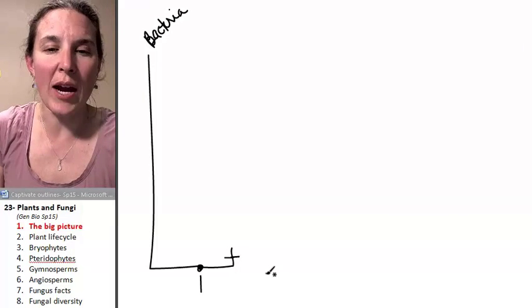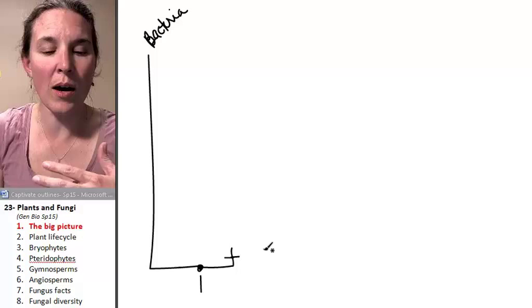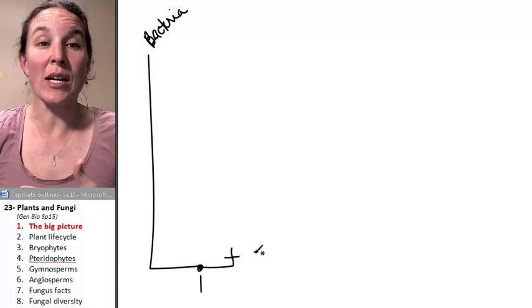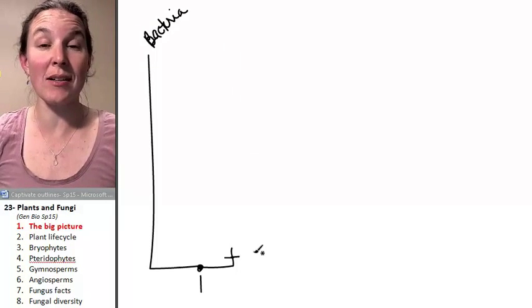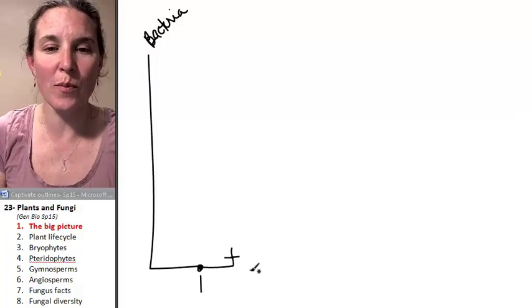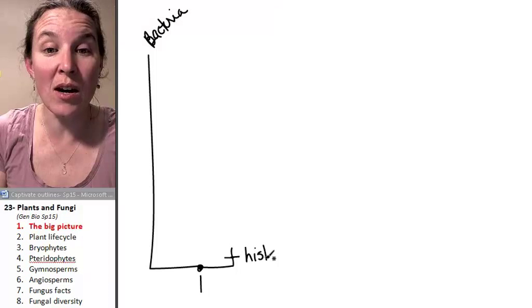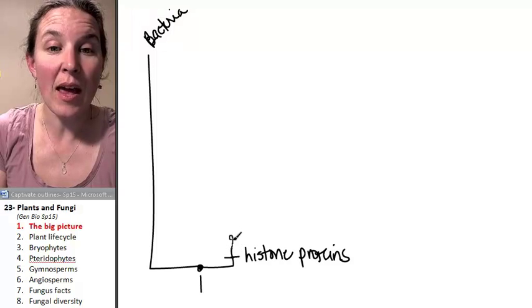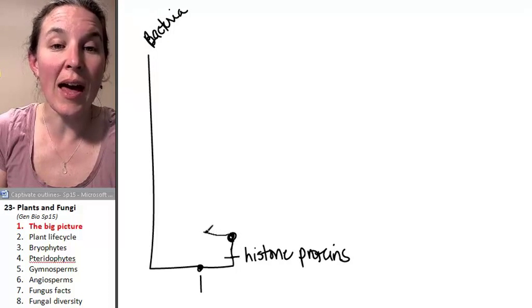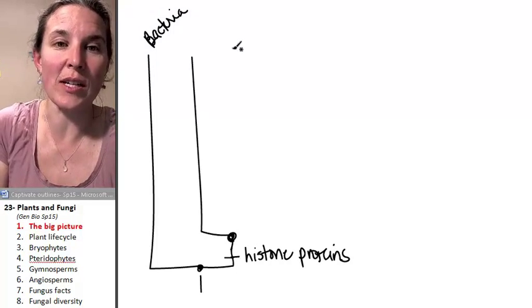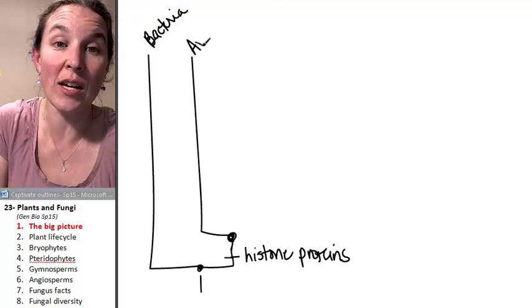But there was another branch that, during some sort of speciation event, this branch got histone proteins. And everyone beyond this point got those histone proteins. And that branch, that ancestor that had histone proteins, gave rise to the Archaea.